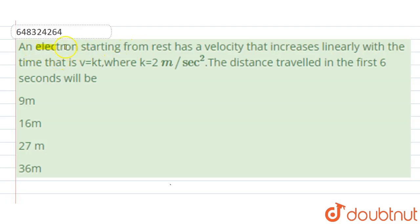An electron starting from rest has a velocity that increases linearly with time. The velocity expression is v = kt, where k = 2 m/s².